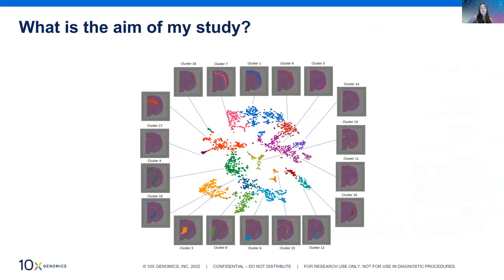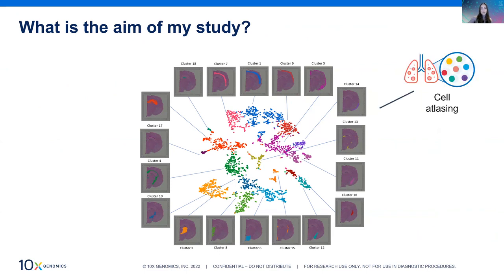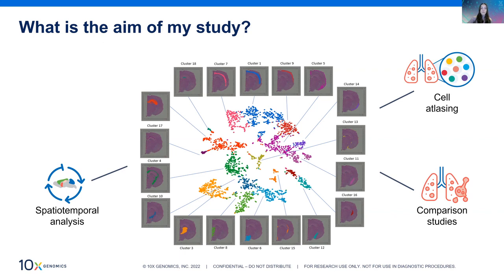After deciding between H&E staining and immunofluorescent staining, consider what you're trying to find out with Visium. Use cases include cell atlasing — characterizing, identifying, and cataloging tissue while maintaining spatiality — comparison studies between normal and disease tissue, spatial temporal analysis tracking cell populations and gene expression patterns over time and disease progression, and uncovering novel biomarkers and gene signatures of cellular and disease processes.